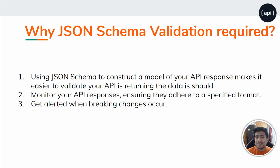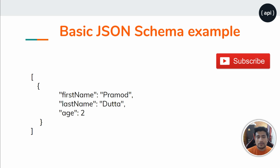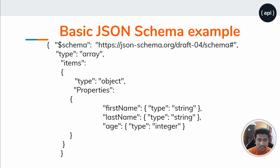You will also get an alert whenever there is a breaking change in your JSON response, because the JSON schema validation will not match. For example, a basic JSON looks like an array where each item has fields: first name, last name as strings, and age as an integer.